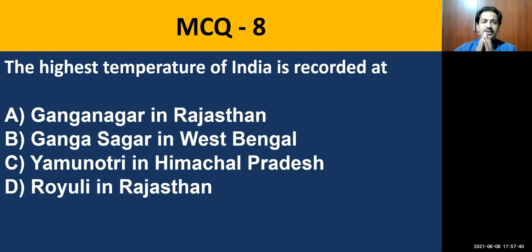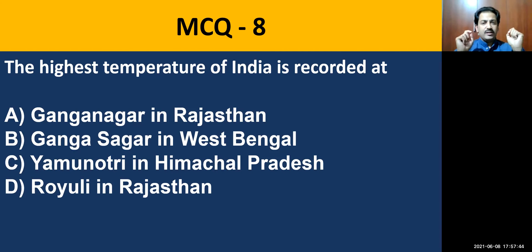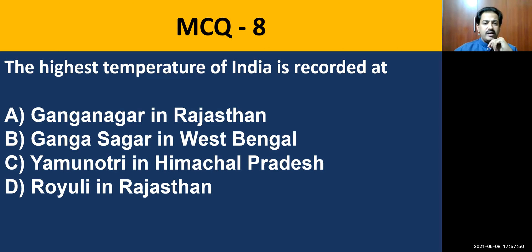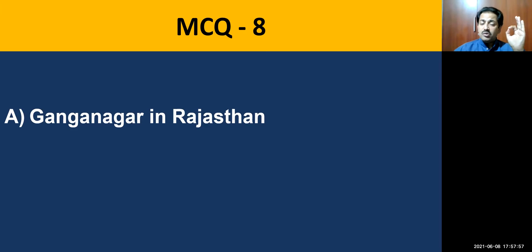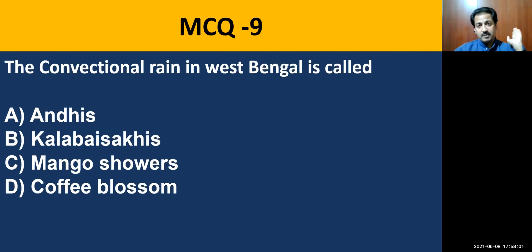MCQ question number eight: the highest temperature of India is recorded where? The correct answer is Ganganagar in Rajasthan — highest temperature almost 52 degrees Celsius and above. Keep this in mind.